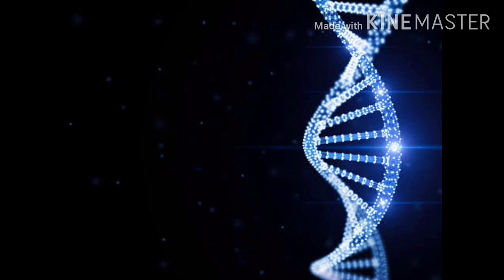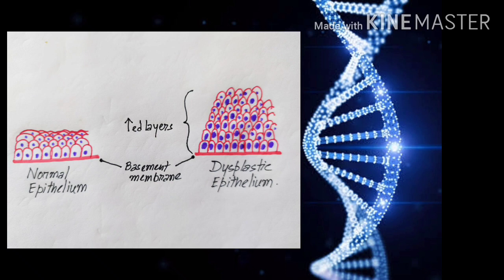The first one is increased number of layers of epithelial cells. In normal epithelium, there are a certain number of cell layers, but in dysplasia the number of layers are increased.